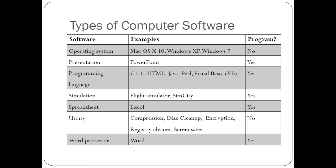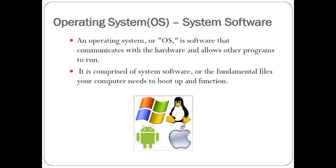Examples of computer softwares in general include programming languages, spreadsheets, utilities, and operating systems. Examples of operating systems include macOS, Windows XP, Windows 7, and so on. The other name for system software is equivalent to operating system. The operating system allows communication between other programs and the hardware.